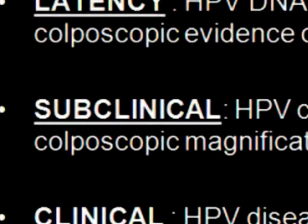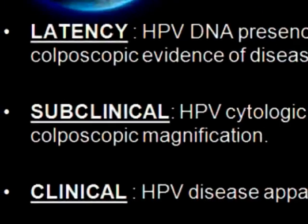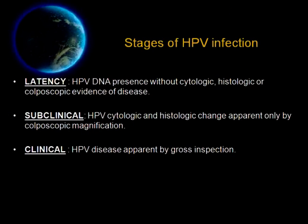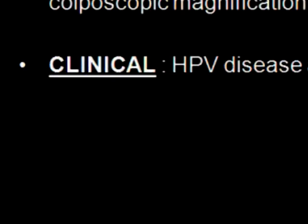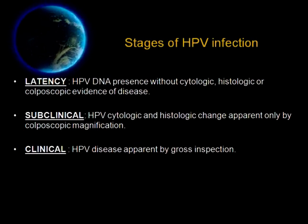The second stage is called subclinical HPV infection. In this subclinical stage, HPV starts using epithelial cells for replication, leading to clinical changes detectable only through special tests and colposcopic magnification — the cervix looks normal to the naked eye. The third stage is called the clinical stage of HPV infection, where HPV disease is apparent even with gross inspection. We will learn how to recognize these stages in subsequent slides.